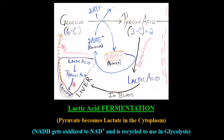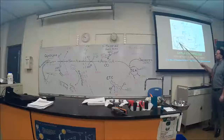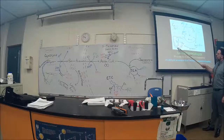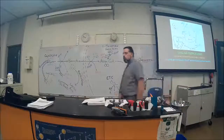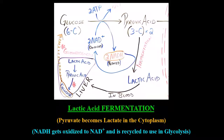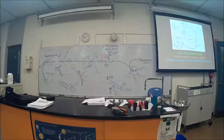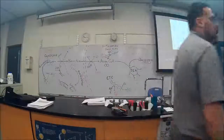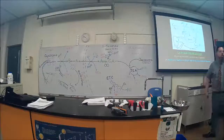Then gluconeogenesis occurs and changes that pyruvic acid back to glucose. The glucose gets put back into the cytoplasm. If you're going into Anatomy and Physiology, you need to know how the liver works — these terms will come back in A&P, which is why this is important foundational material.